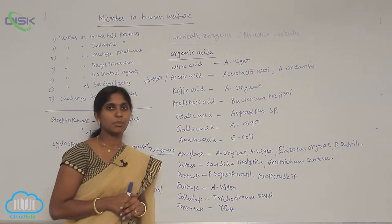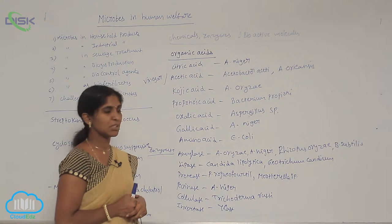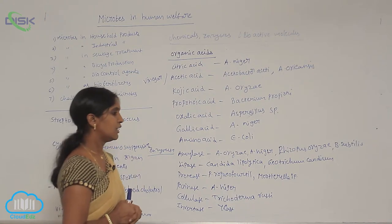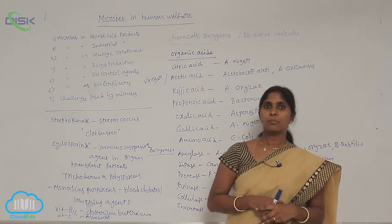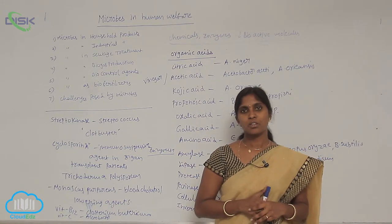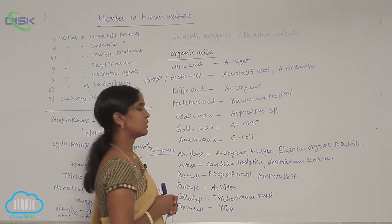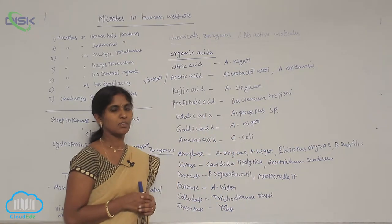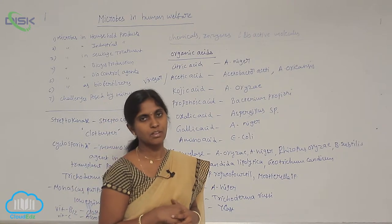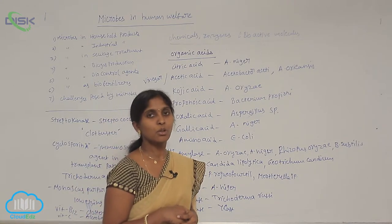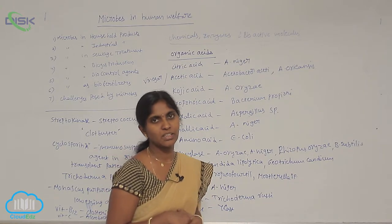Amino acids are prepared commercially using E. coli cultures. Different types of enzymes are also prepared using microbes. For example, in cool drinks and bottled juices, the products are very pure and clean.